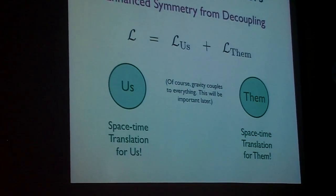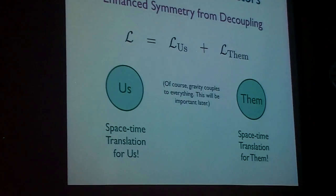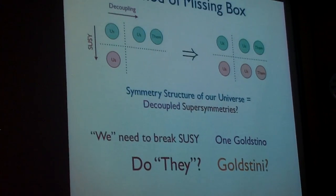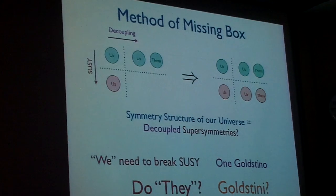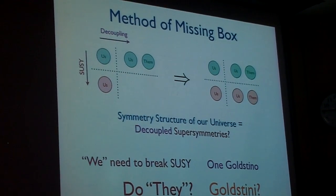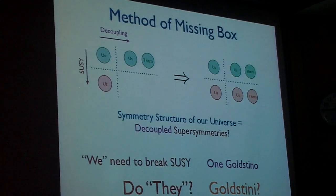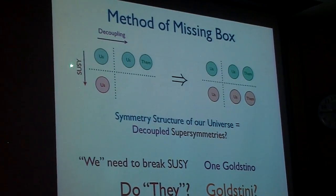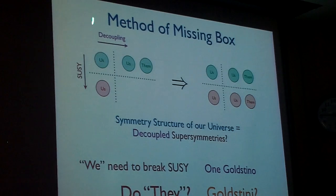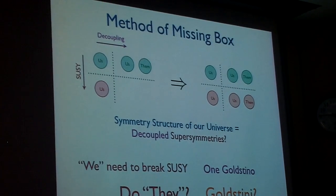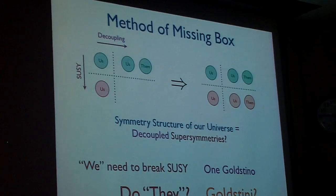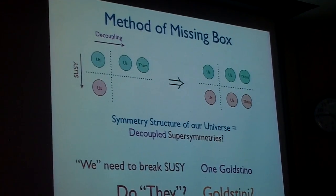Okay, so I've given you two ways of expanding space-time symmetry, one by supersymmetry, one by decoupling, using the time-honored method of the missing box, which I learned from Sidney Coleman when I took a field theory class at Harvard. Well, you give two things, do them at the same time. So I've told you that you can enhance space-time symmetry with supersymmetry, you can enhance space-time symmetry by decoupling. Do them both at the same time. Perhaps the symmetry structure of our universe corresponds to decoupled supersymmetries.